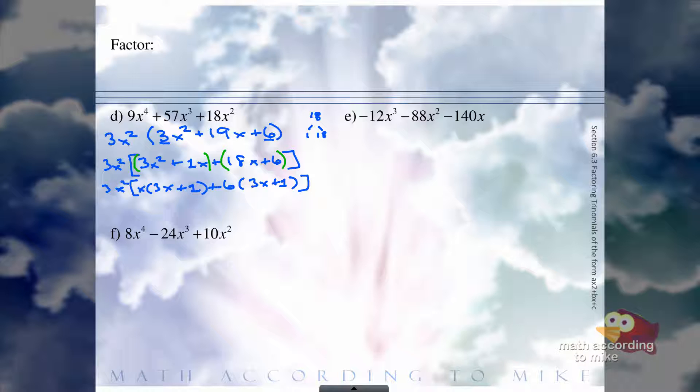If you are not left with the same thing, then maybe you have to rearrange terms, maybe you didn't pull out the GCF correctly, or maybe it just doesn't factor. But if it says factor as the directions, it's most likely rigged to always work. Notice both of those intermediate terms inside the brackets have a 3X plus 1. Let me first write down the 3X squared. Then I can write the 3X plus 1 that they both have in common, and then if I took that out, I'm left with X plus 6. So that is the final factorization of 9X to the 4th plus 57X cubed plus 18X squared.